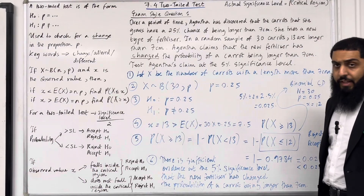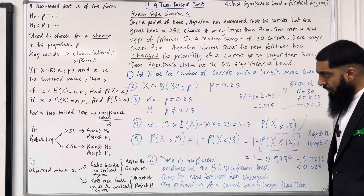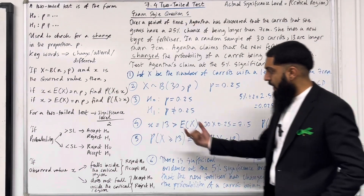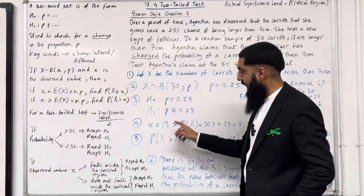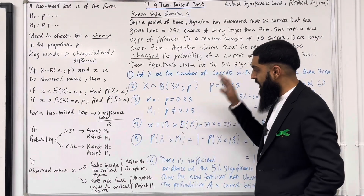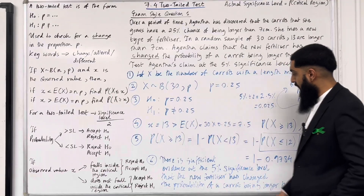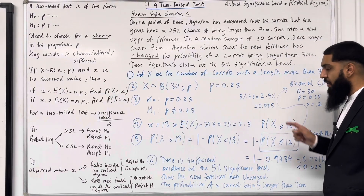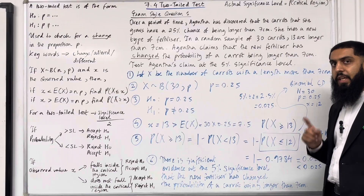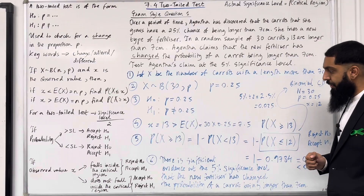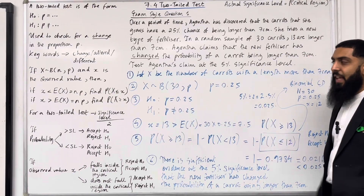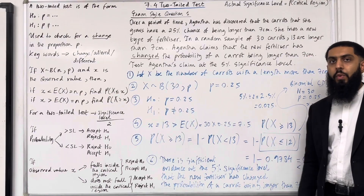A note on variations: in the examination, if your observed value was less than the expected value, then instead of using greater than or equal to, you would use less than or equal to. This completes exam-style question 1.